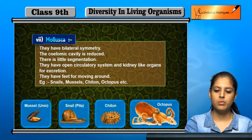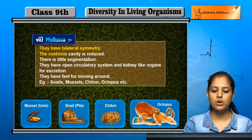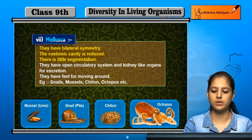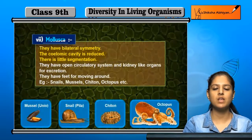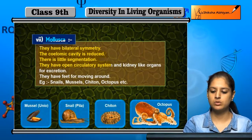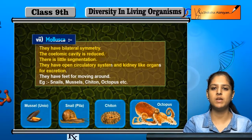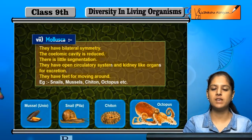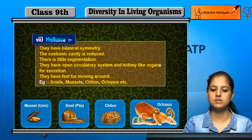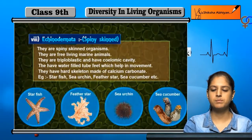Next is Mollusca. They are also bilaterally symmetrical. Their coelomic cavity is reduced and they have small segmentations. They have an open circulatory system and organs like kidneys for excretion. They have feet for movement. Examples include snails, mussels, Chiton, octopus, etc.